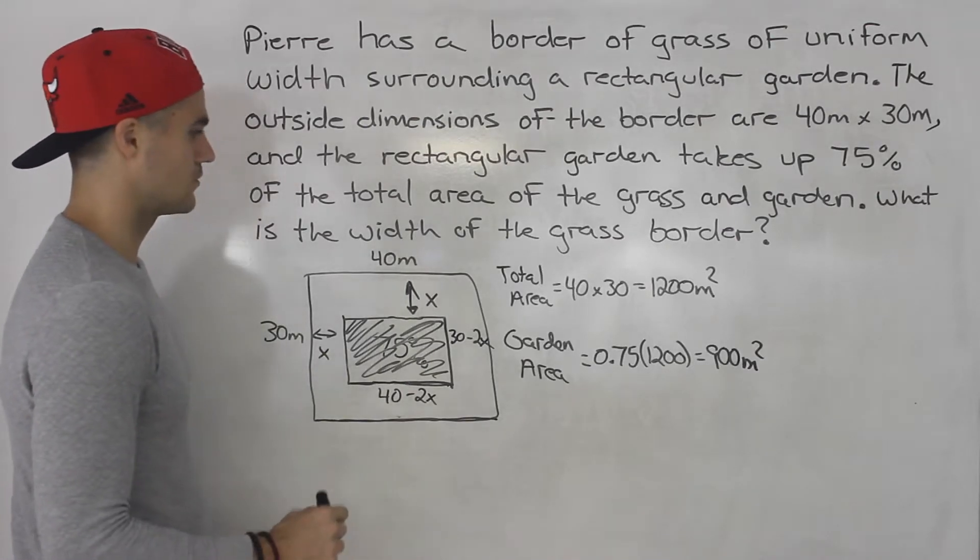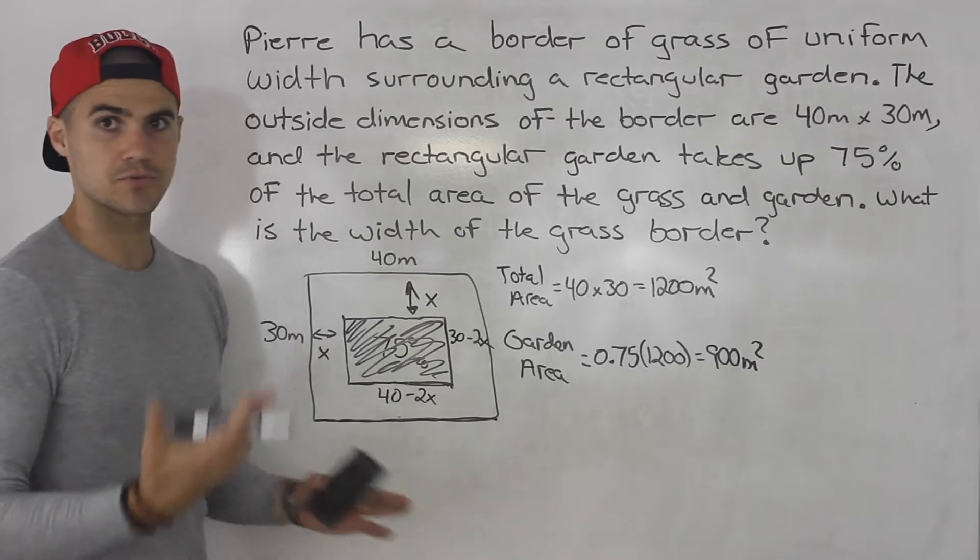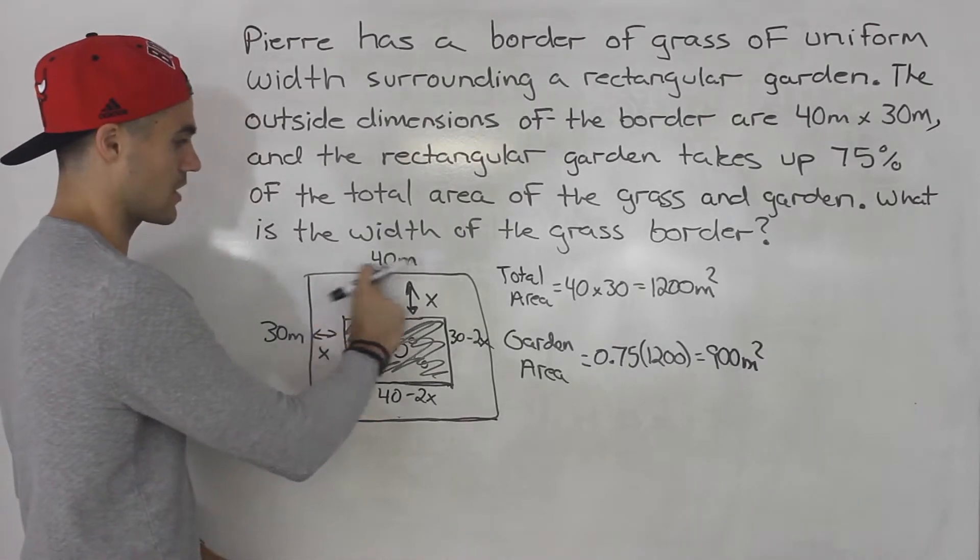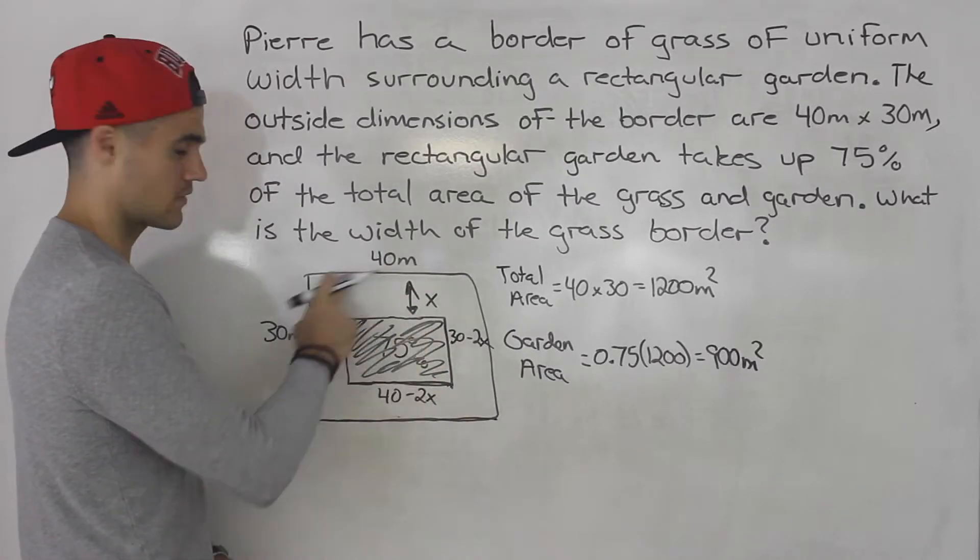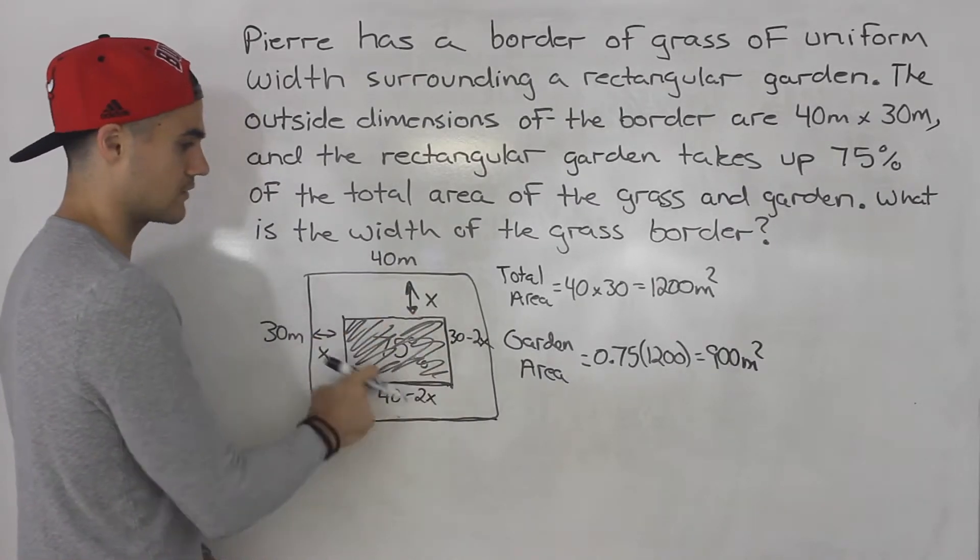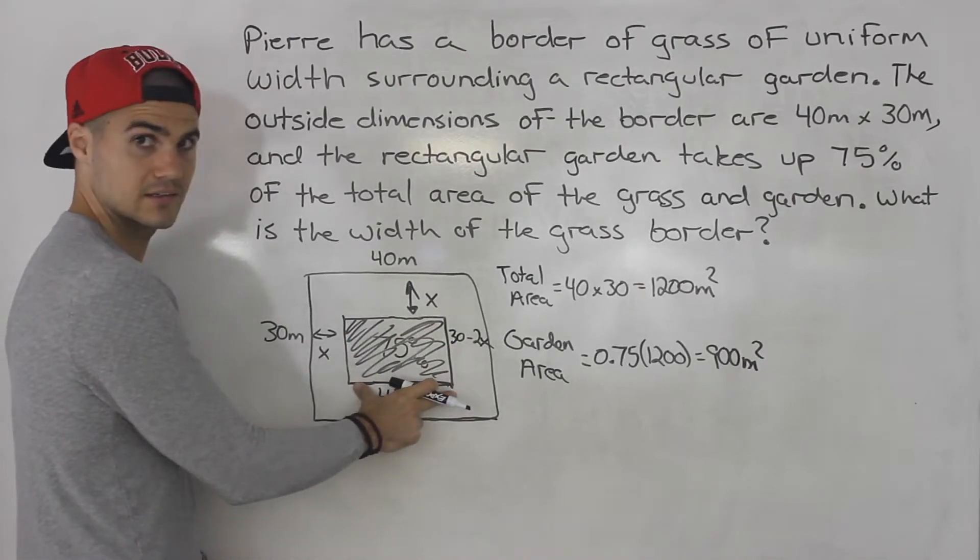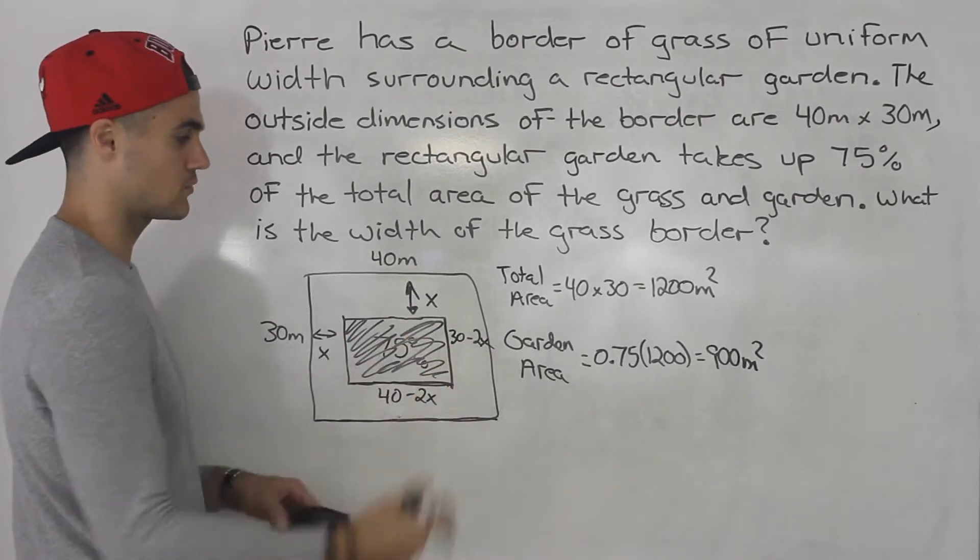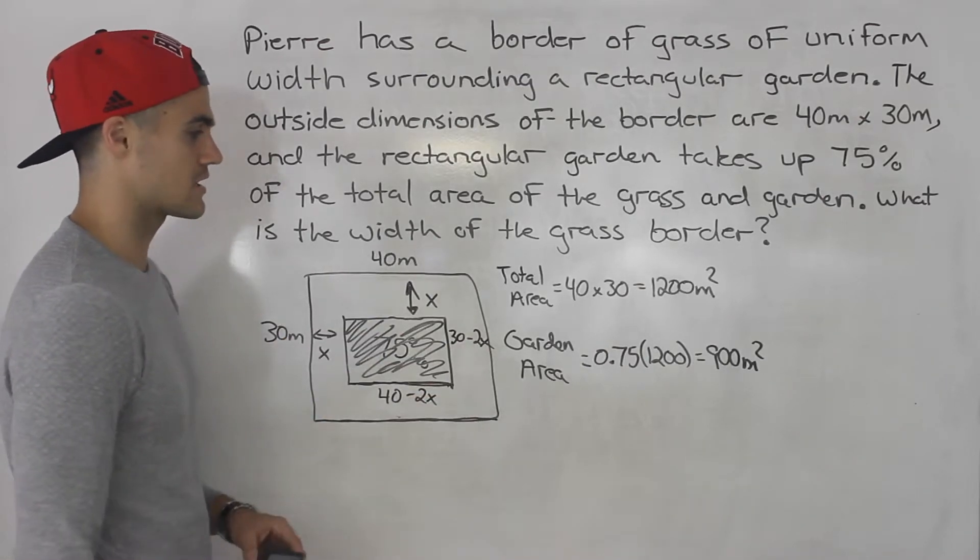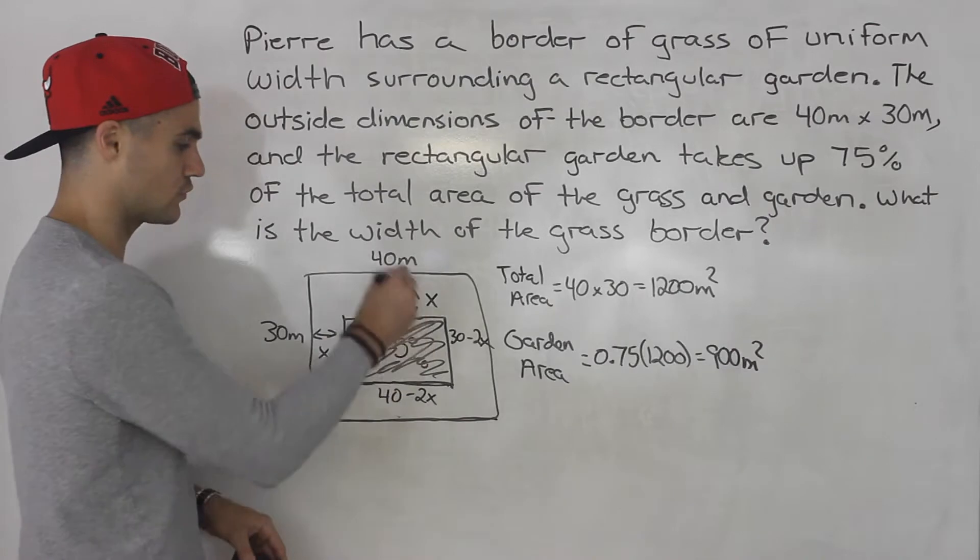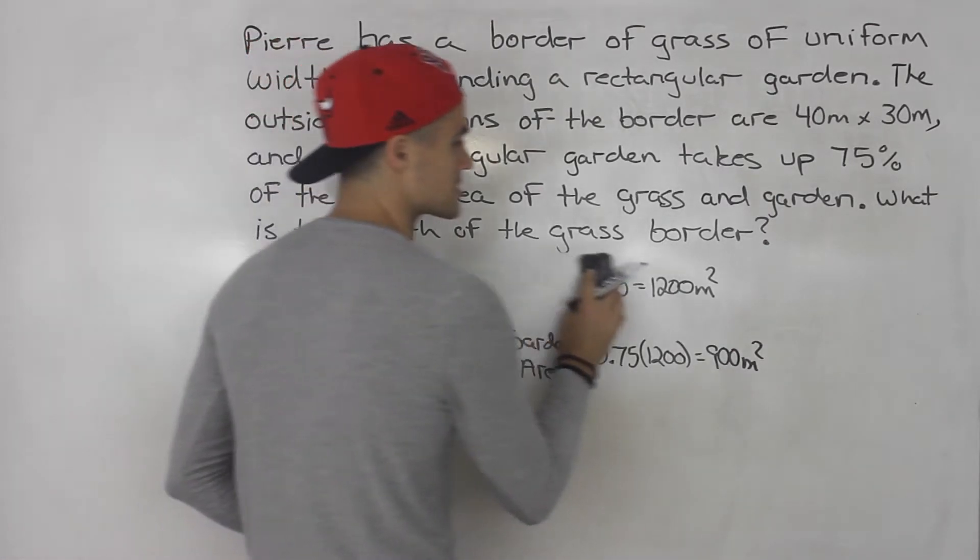These types of questions I'd recommend doing as many as possible because there could be multiple scenarios. Sometimes they give you maybe the area of the border surrounding this rectangle here. So you'd have to take the total area and then subtract this and then make it equal to whatever they say that area is. There can be multiple scenarios they give you. So these types of uniform questions make sure you're getting as much practice as possible.